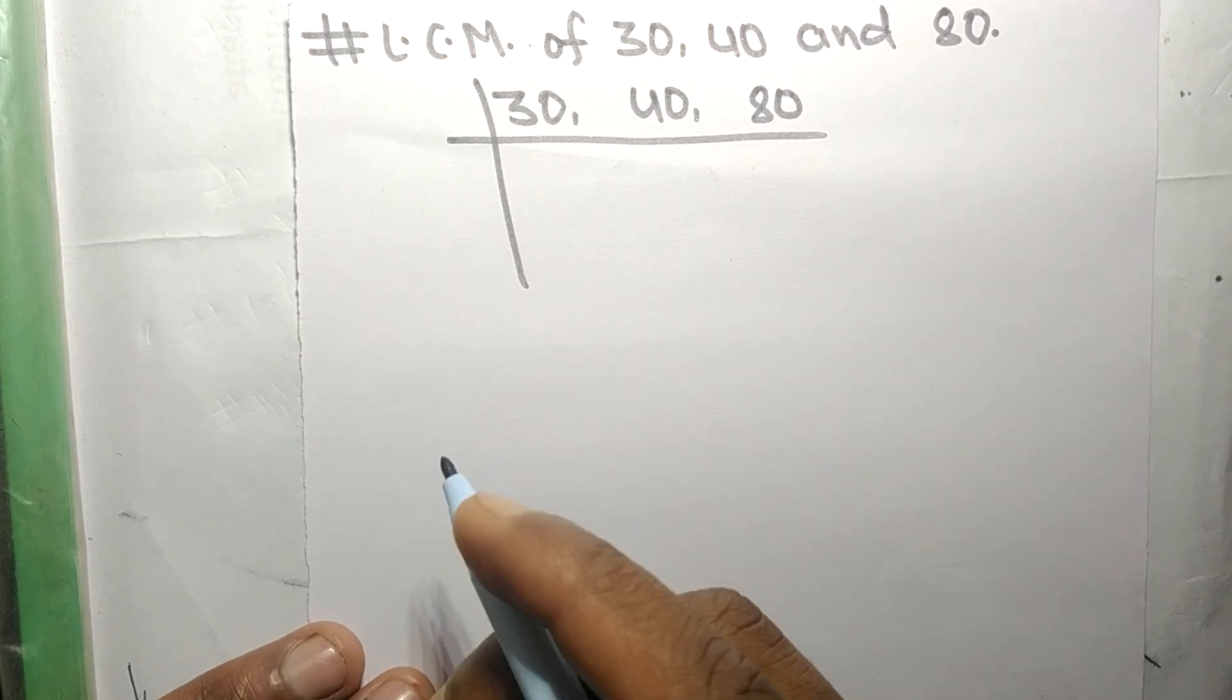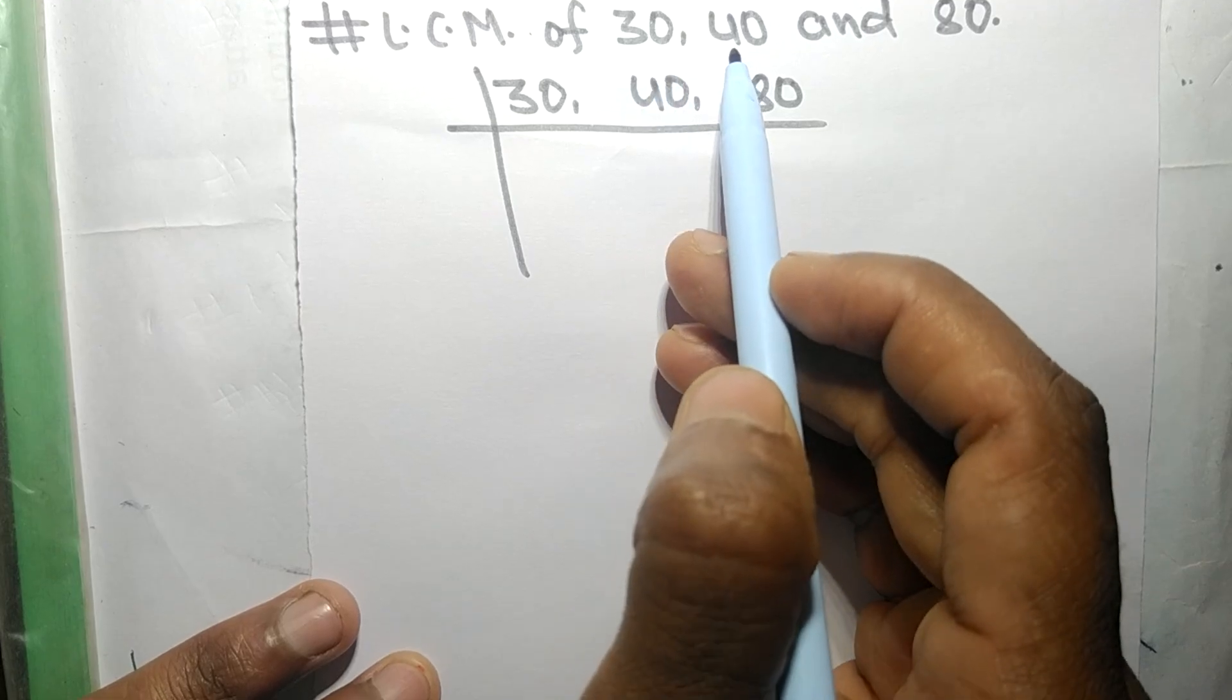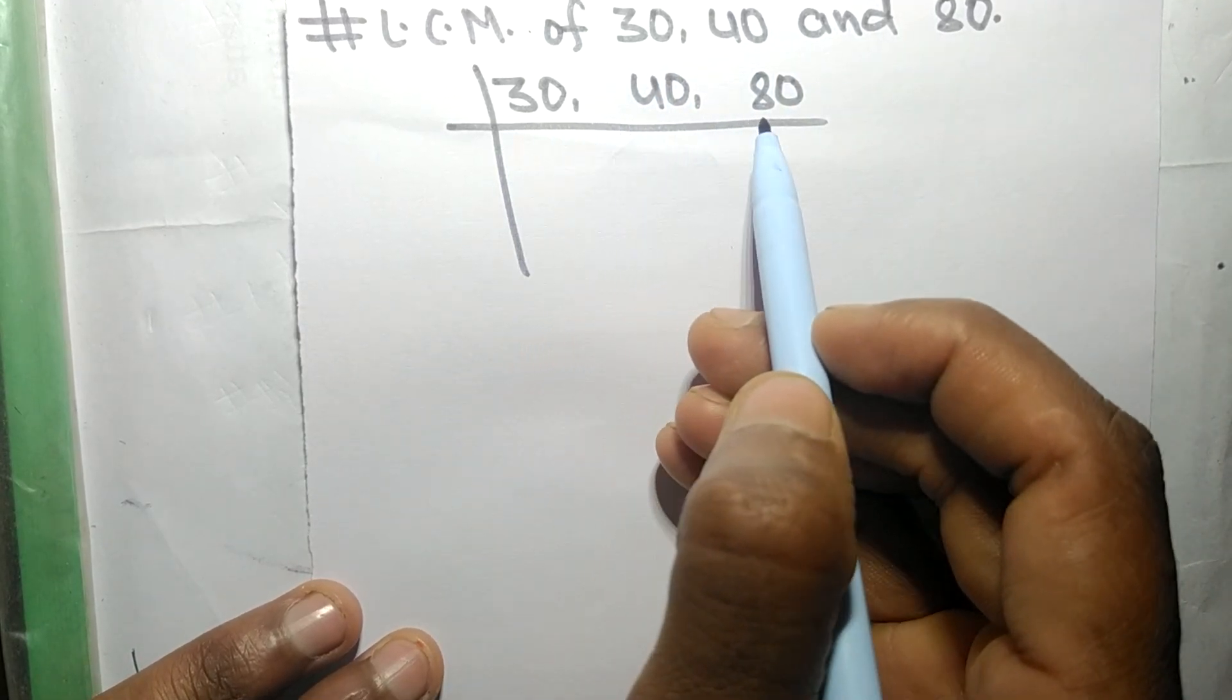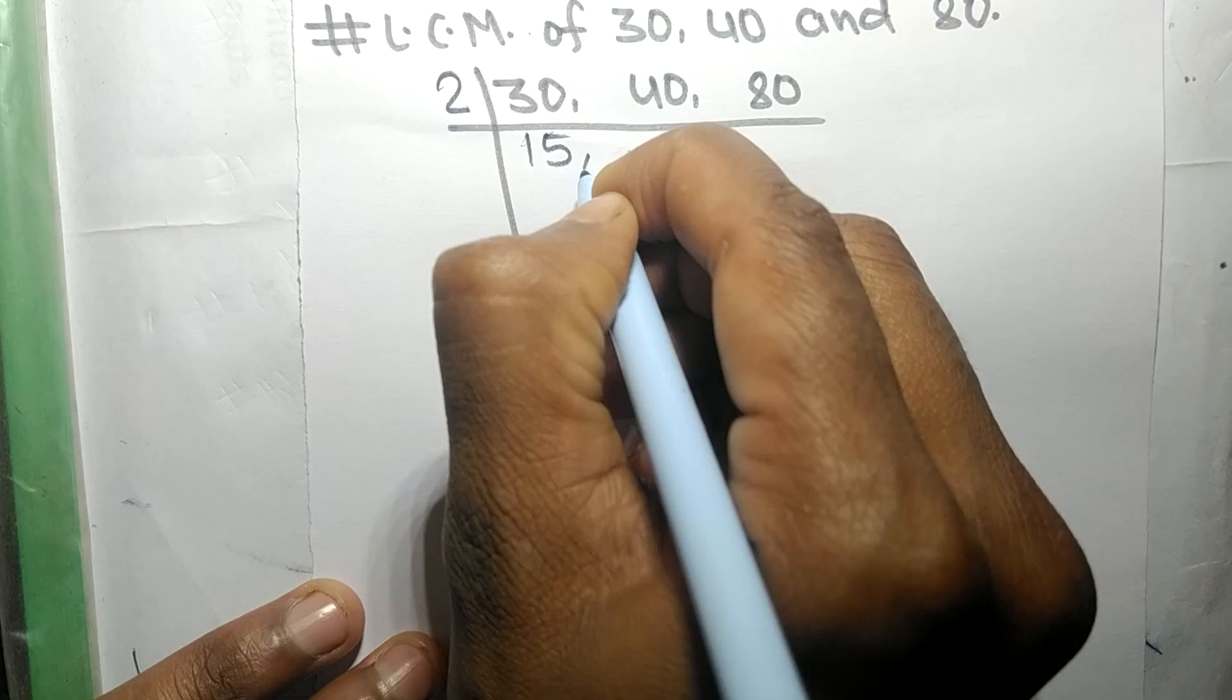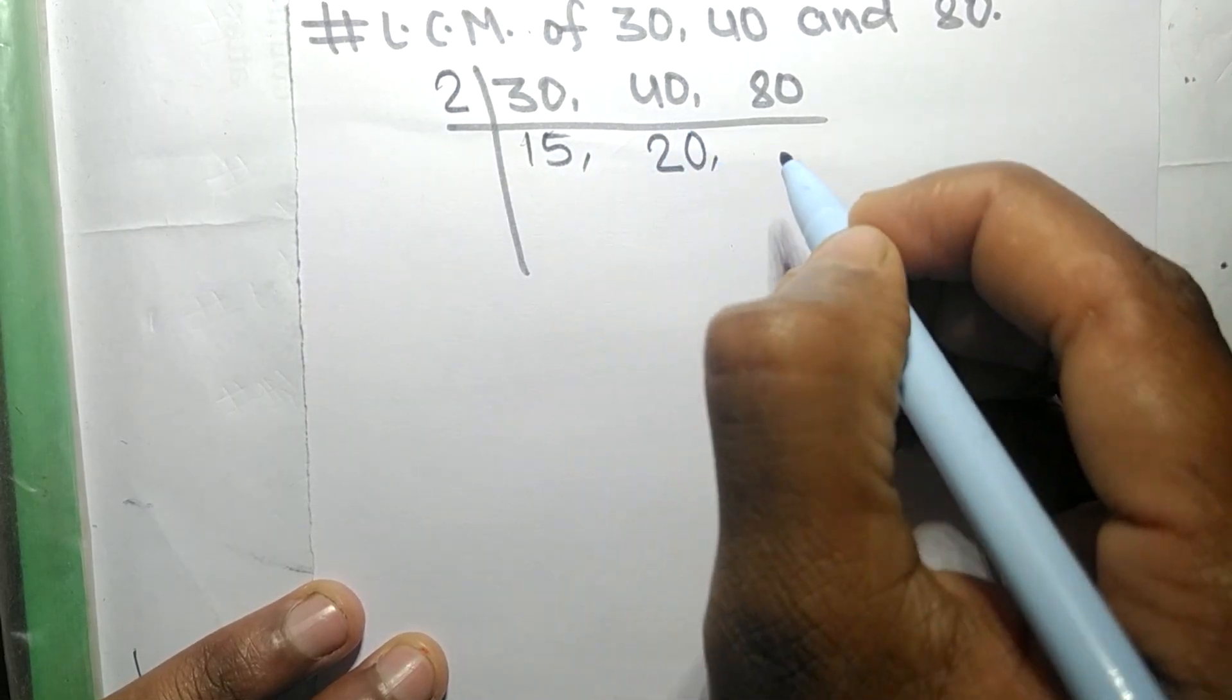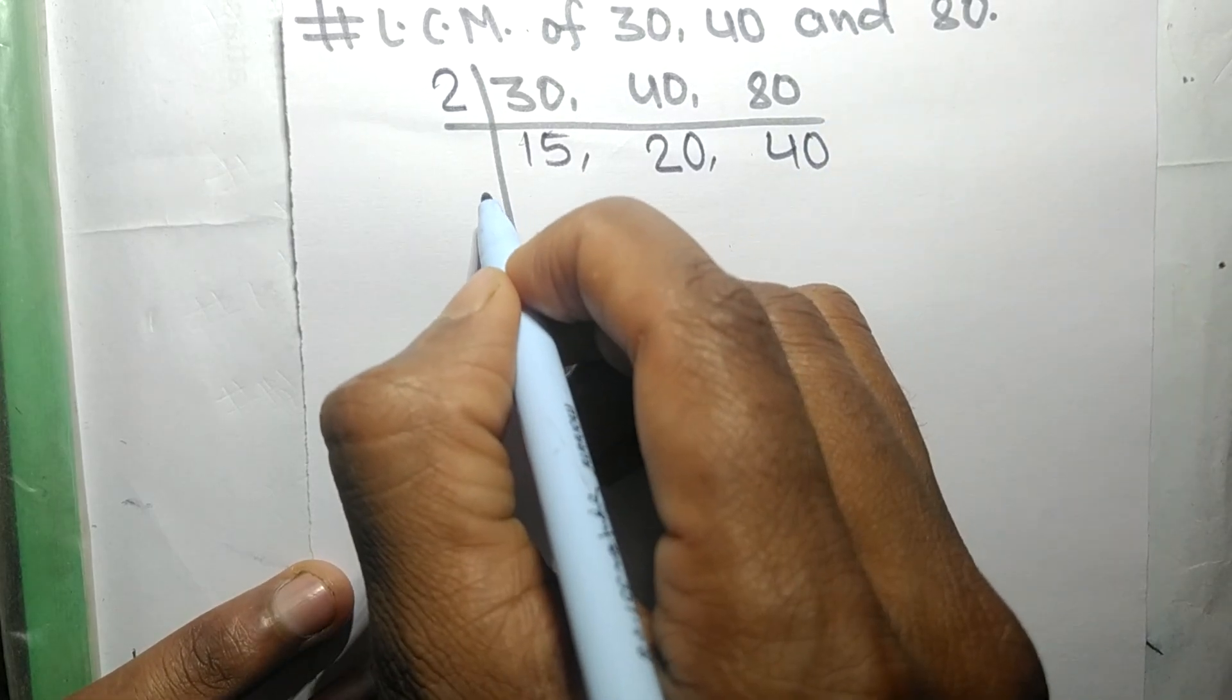So today in this video we shall find LCM of 30, 40 and 80. These all numbers are exactly divisible by 2. So 2 times 15 equals 30, 2 times 20 equals 40, 2 times 40 equals 80.